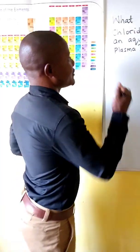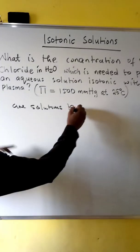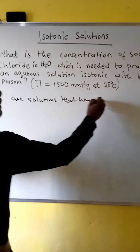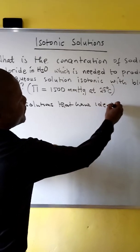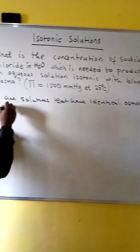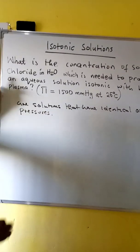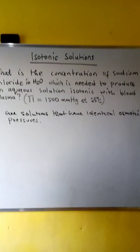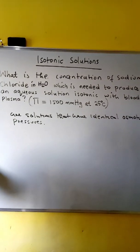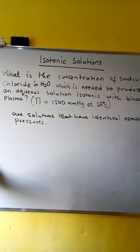Hi everyone. In today's tutorial we'll look at isotonic solutions — solutions that have identical osmotic pressures. Example: what is the concentration of sodium chloride in water which is needed to produce an aqueous solution isotonic with blood plasma?